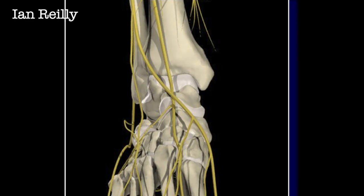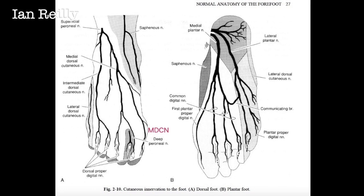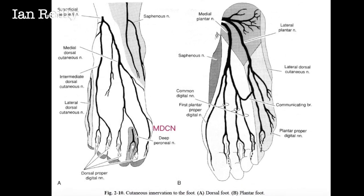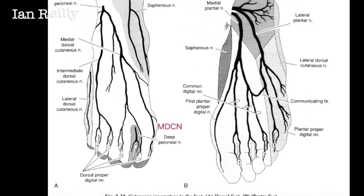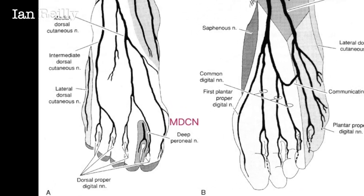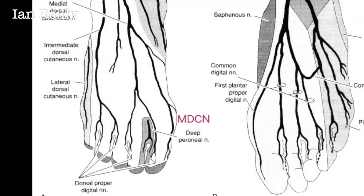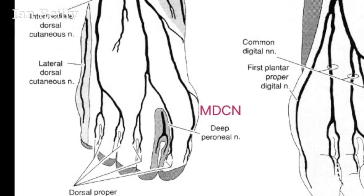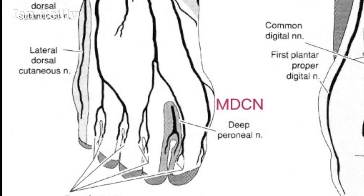Here's a picture from Vincent Hetherington's 1994 book — excellent but old, but still really good — showing the dorsal medial cutaneous nerve as it goes forward into the great toe.